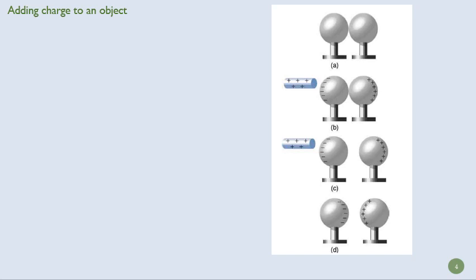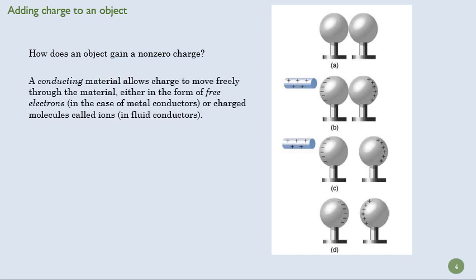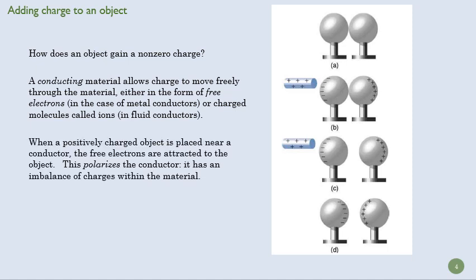So how do we think about having a charged object versus a non-charged object? Well, here we're going to talk about a process called induction, in which we induce charge to move from one object to another, and thus give it either a negative overall net charge or a positive overall net charge. So most matter in contact with the ground is going to have a zero charge. That is, it has an equal number of protons and electrons. But a conducting material will allow some of those electrons to move freely throughout the material. And that might be in terms of a free electron in a metal conductor, or it might be charged molecules in a fluid called ions that can move around in that fluid.